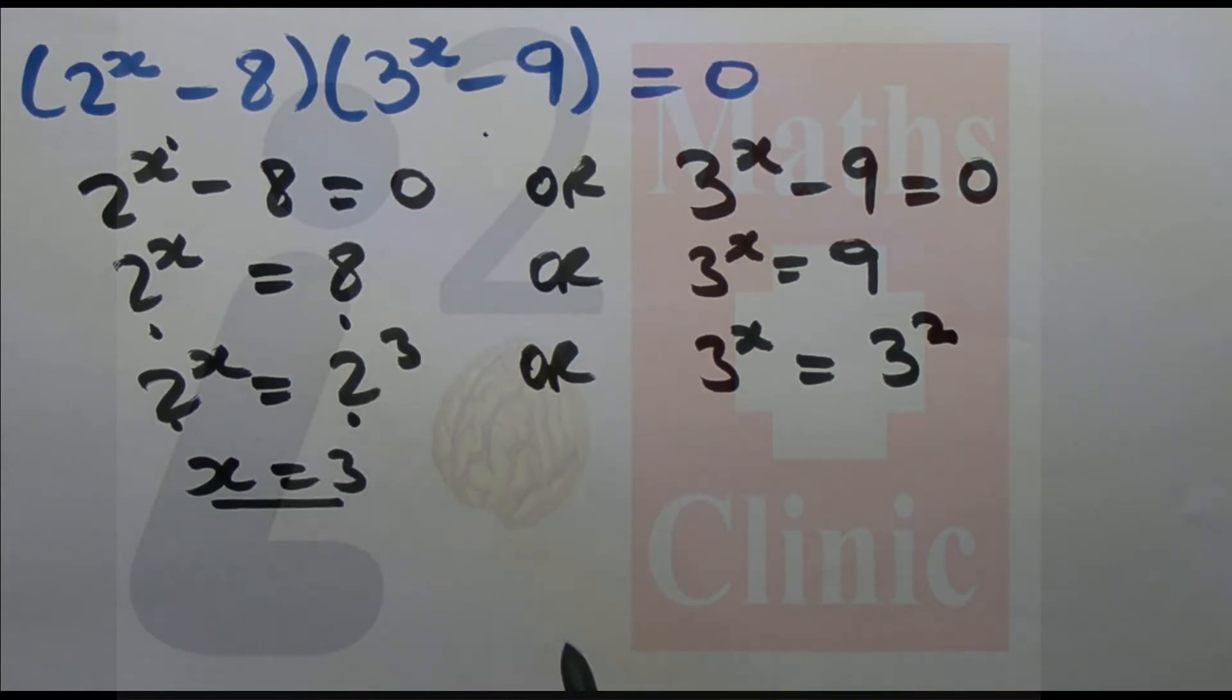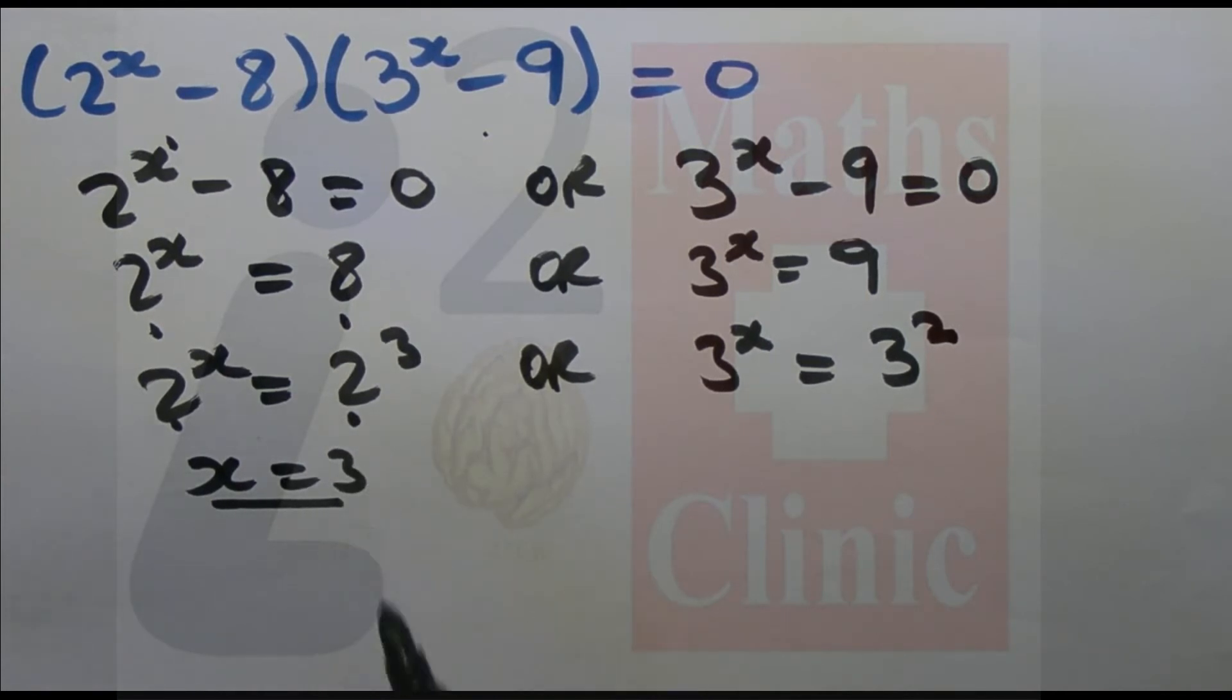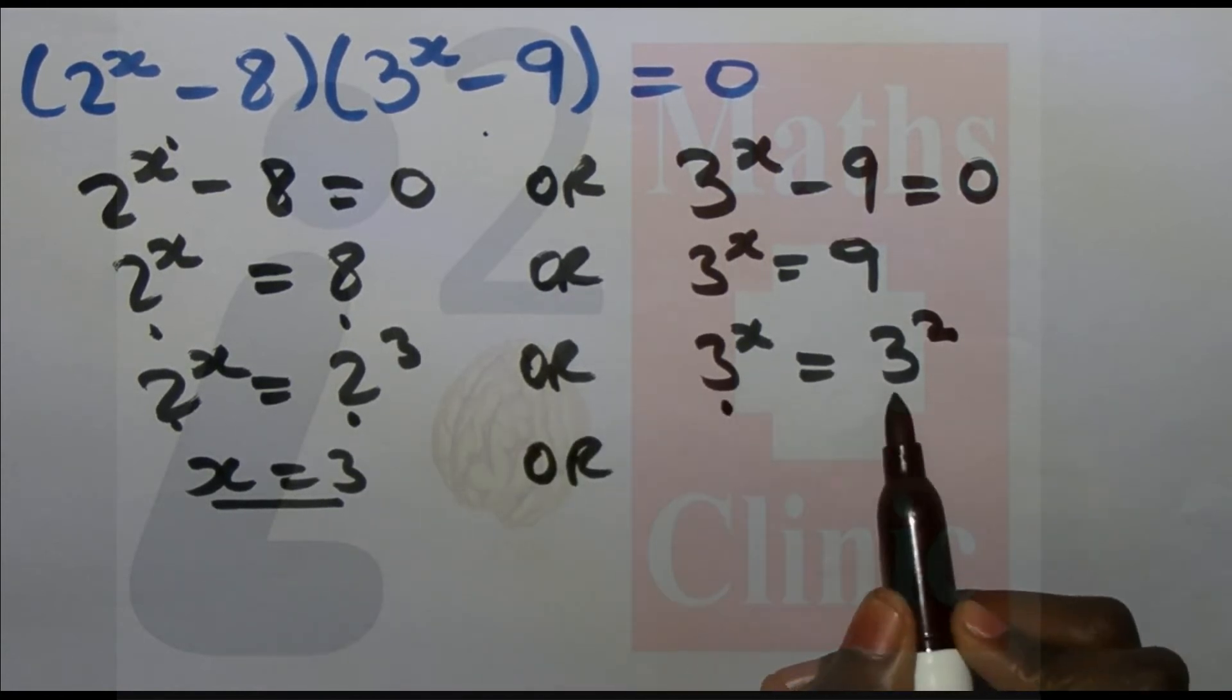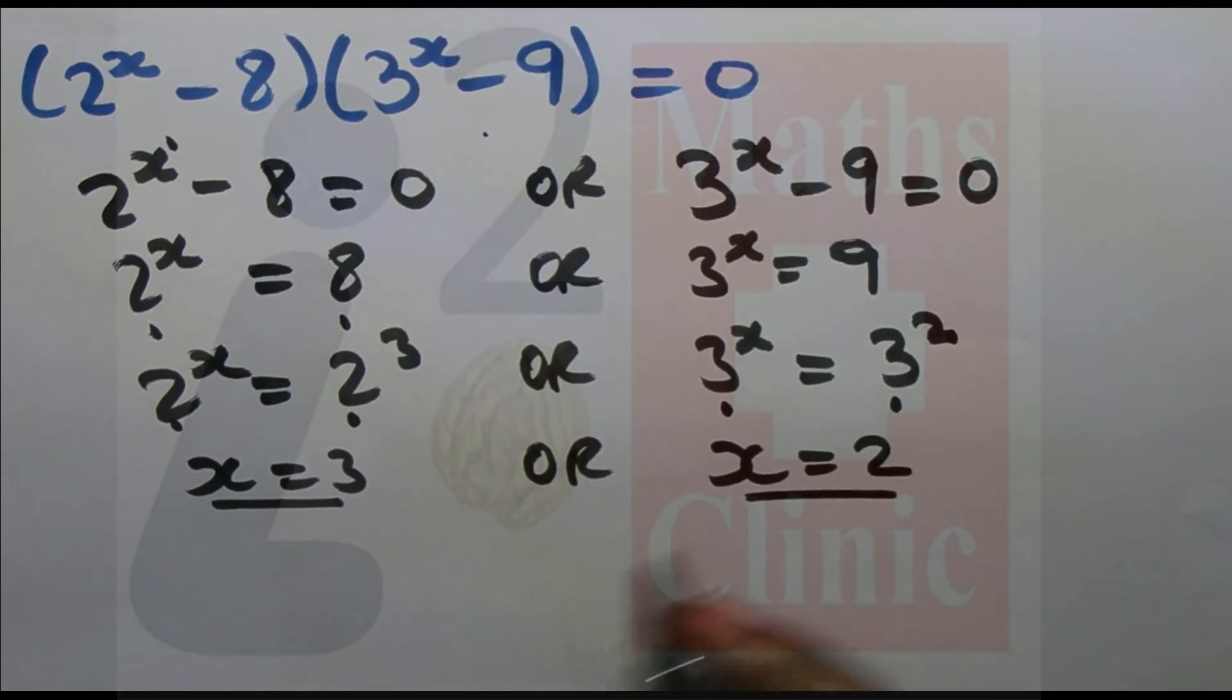And 2^3 means 2 times 2 times 2, which equals 8. So when the bases are equal, we equate the exponents. That's it! Amazing.